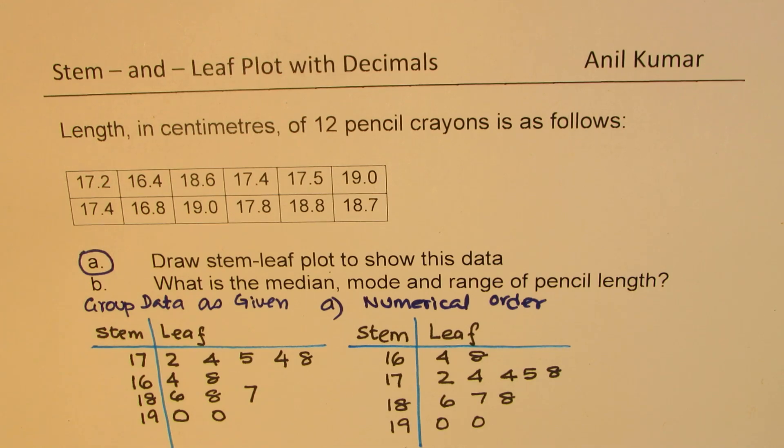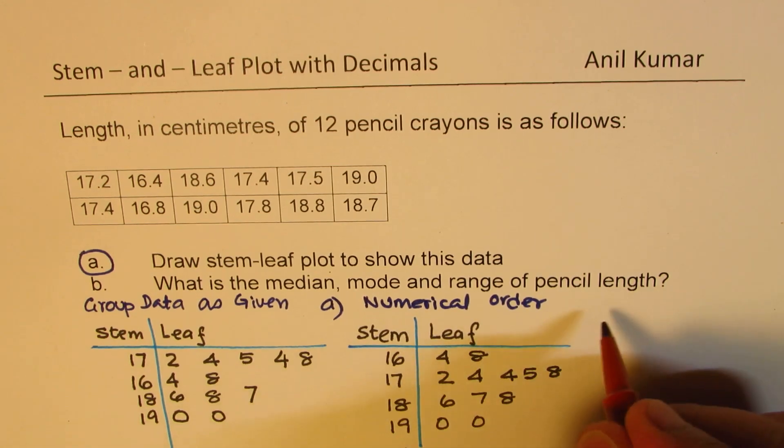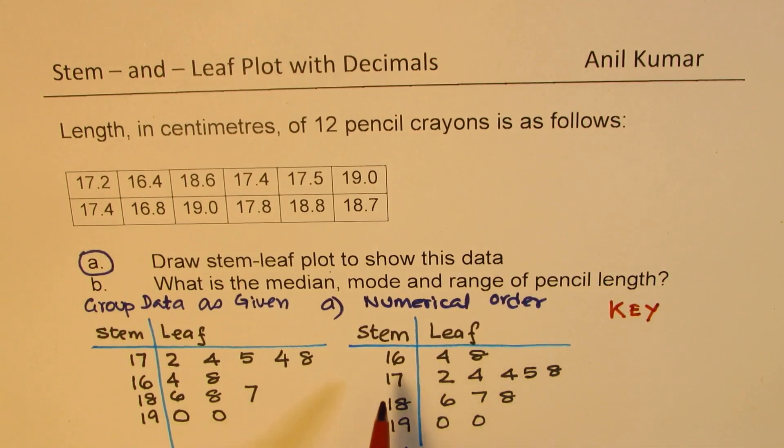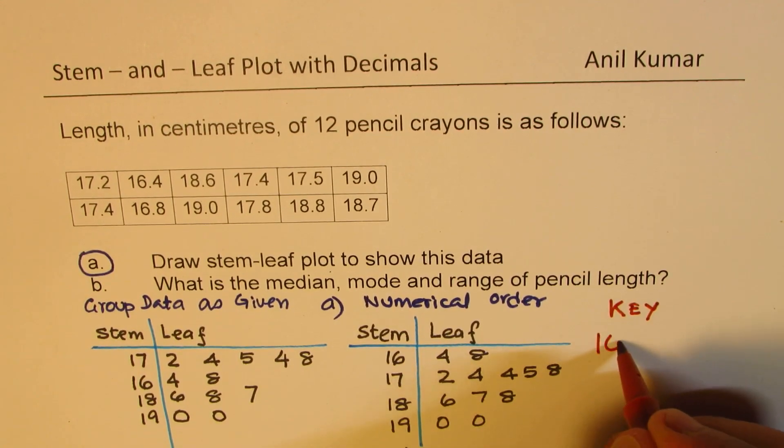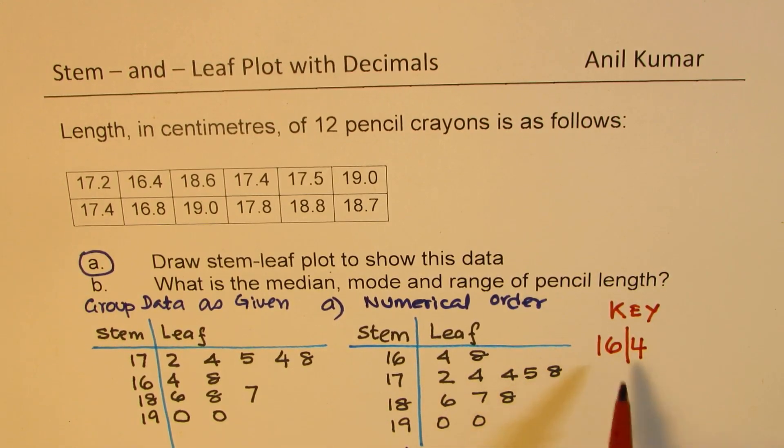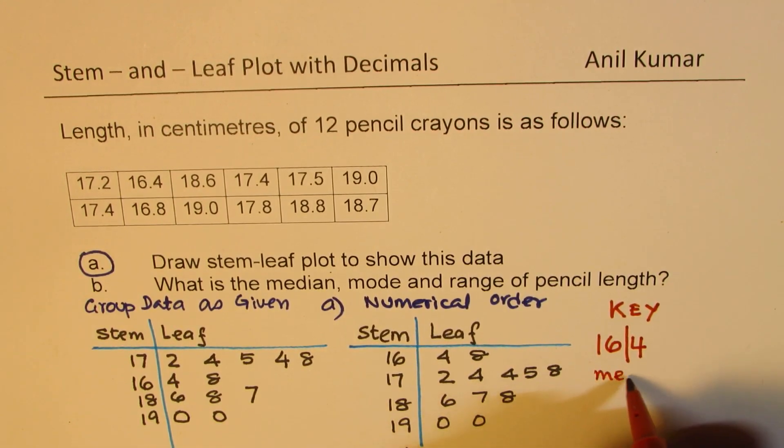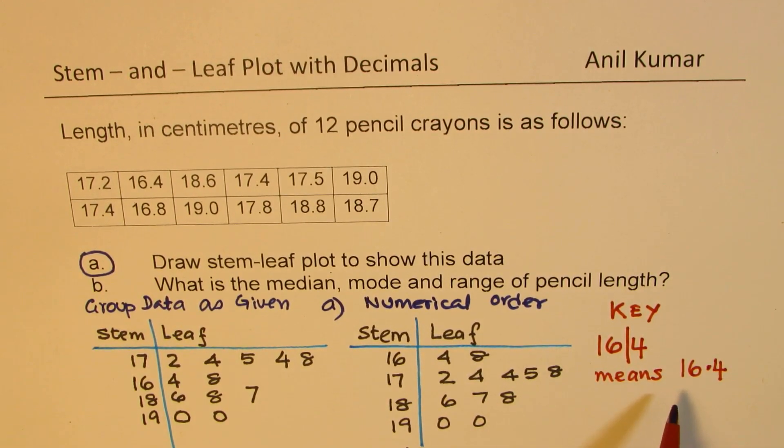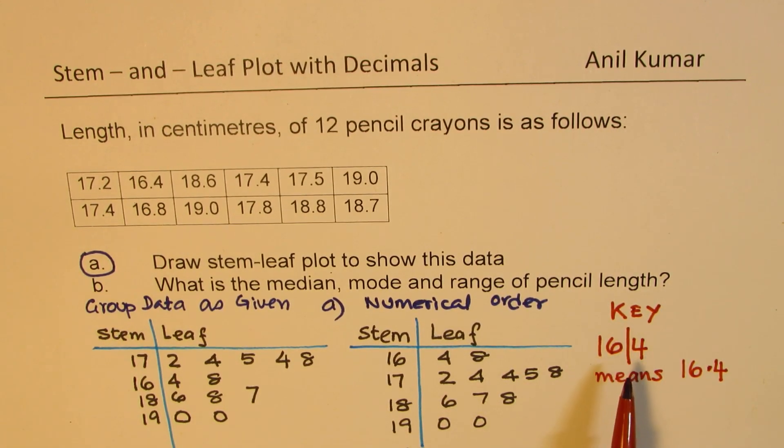However it is still not complete. Most important here is also to remember that it has a key. You have to describe what this represents. So the key here is: if I am writing 16|4, what does it mean? So 16|4 means 16.4. This is key to it.